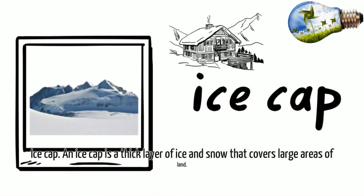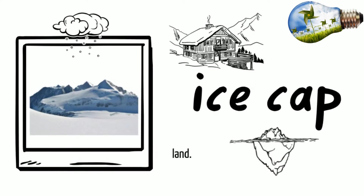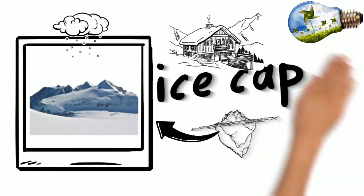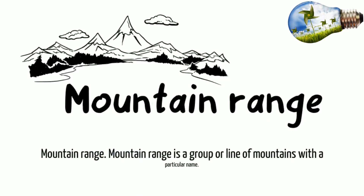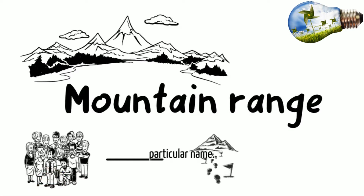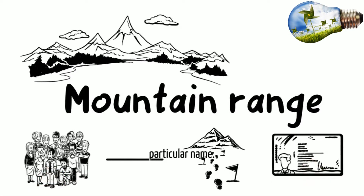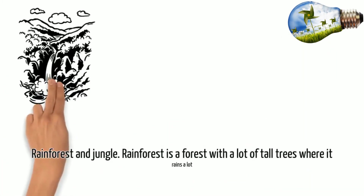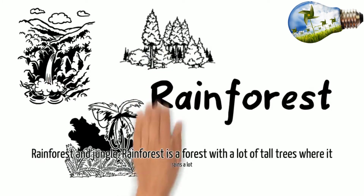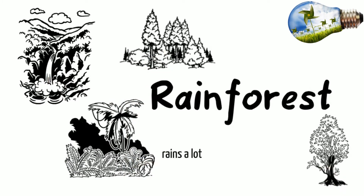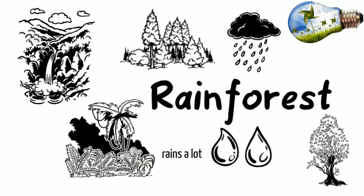Ice cap. An ice cap is a thick layer of ice and snow that covers large areas of land. Mountain range. Mountain range is a group or line of mountains with a particular name. Rainforest and jungle. Rainforest is a forest with a lot of trees where it rains a lot.